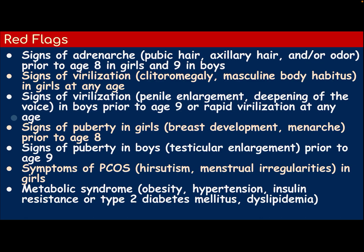Signs of puberty in girls: breast development or menarche prior to age 8. Signs of puberty in boys: testicular enlargement prior to age 9. Symptoms of polycystic ovarian syndrome include hirsutism, menstrual irregularities in girls, metabolic syndrome, obesity, hypertension, insulin resistance or type 2 diabetes mellitus, and dyslipidemia.